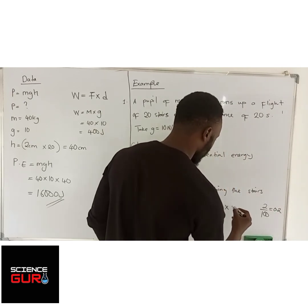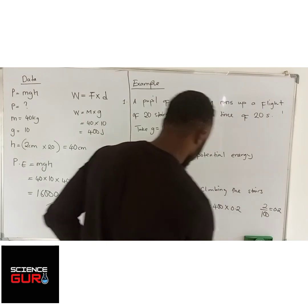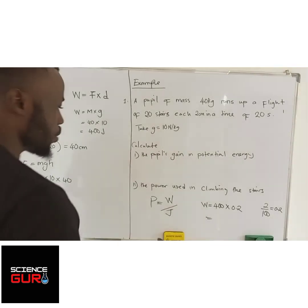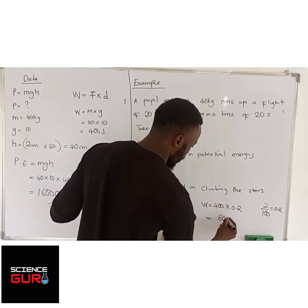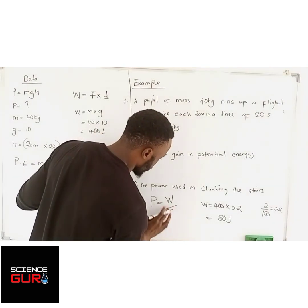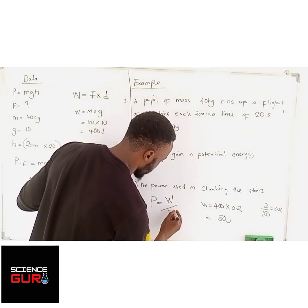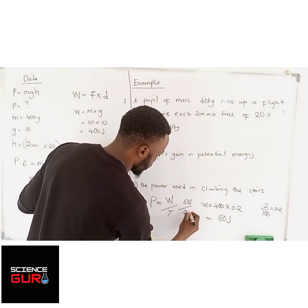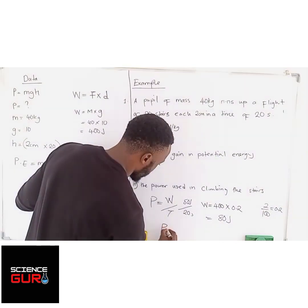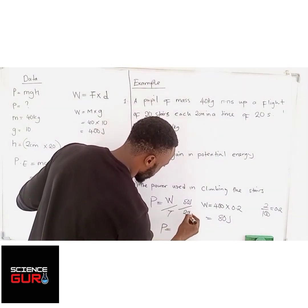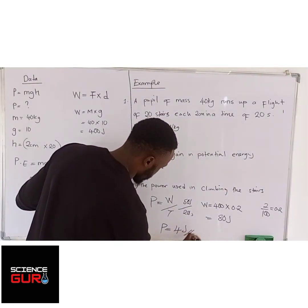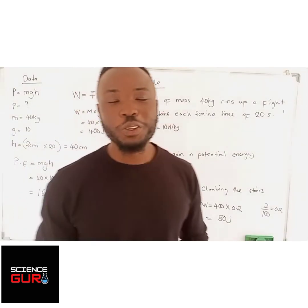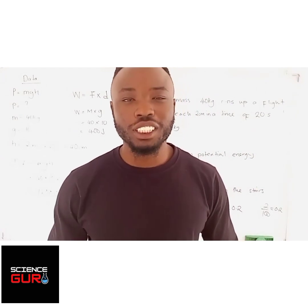So work done equals 400 newtons times 0.2 meters, giving us 80 joules. Power equals work done over time. Work done is 80 joules and the time given is 20 seconds. So power equals 80 divided by 20, which gives you 4 watts. Hope you enjoyed the lesson. Thank you for watching. Bye bye.